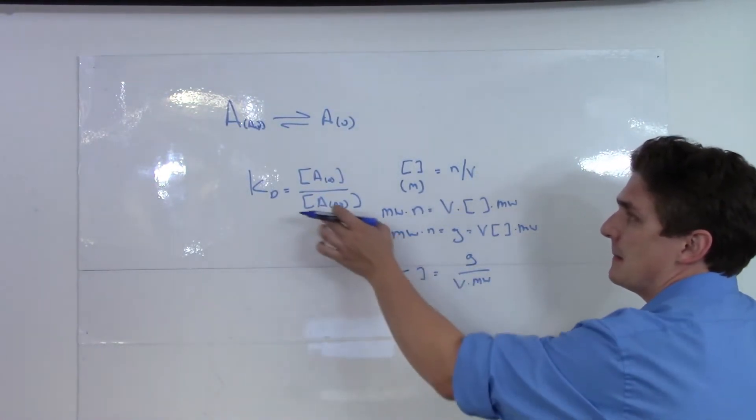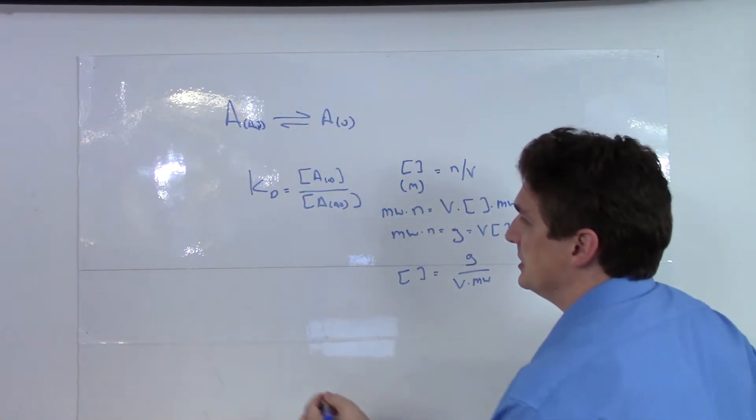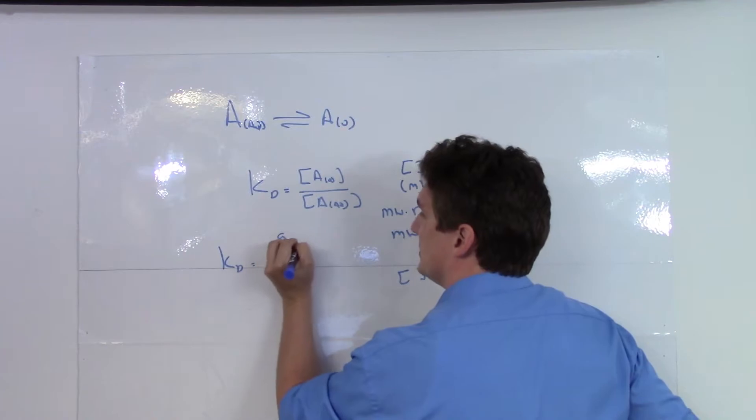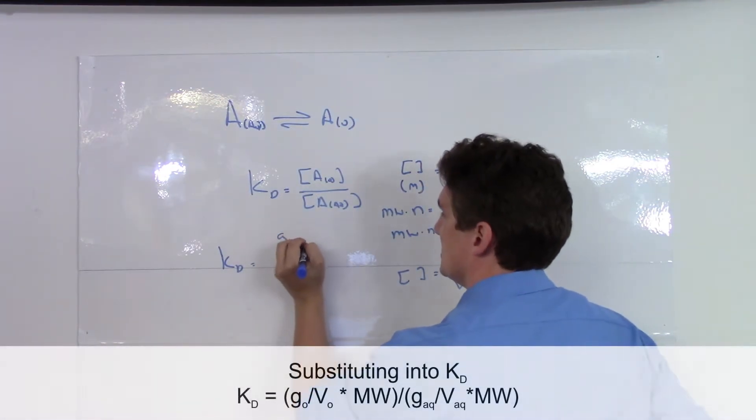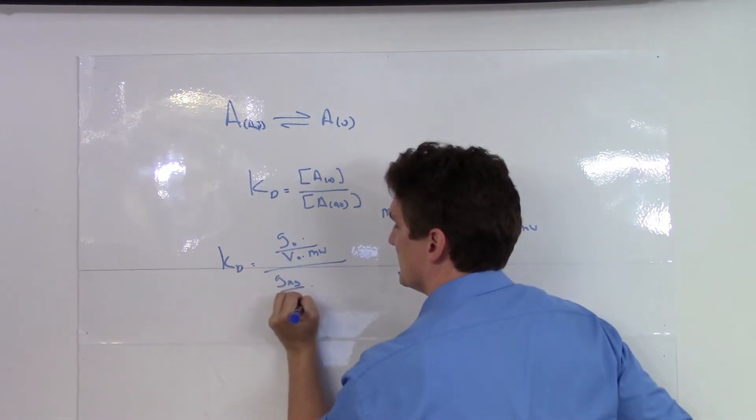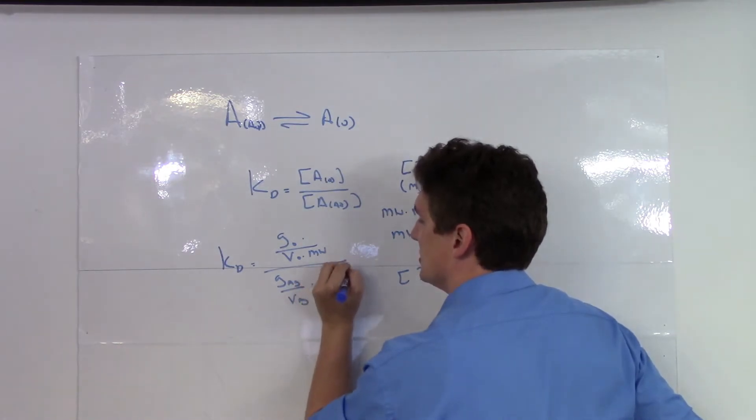If we stick this back into this expression, we'll get that KD equals the grams in the organic phase times the volume of the organic phase times the molecular weight divided by the grams of the aqueous phase over the volume of the aqueous phase times the molecular weight.